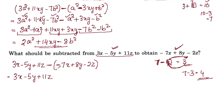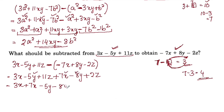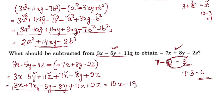We open the bracket and change the signs. This becomes minus 7x, which gives plus 7x. 8y becomes minus 8y. Minus 2z becomes plus 2z. Collecting like terms: 3x + 7x = 10x; -5y - 8y = -13y; 11z + 2z = 13z. The answer is 10x - 13y + 13z.